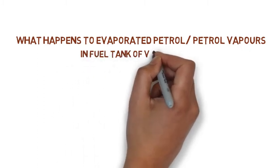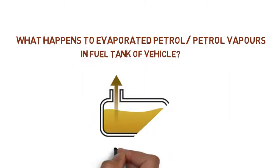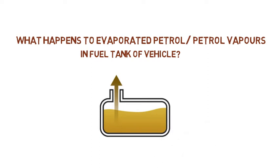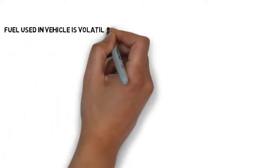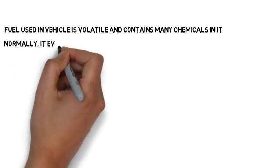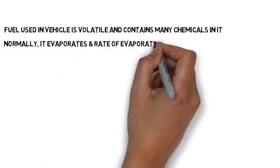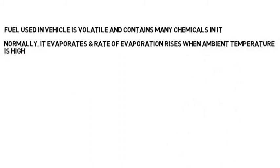Hello friends. Fuel is stored in the fuel tank of the vehicle and evaporation is a general phenomenon at ambient temperature. Today we will see what happens to these evaporated petrol vapors which are formed in the fuel tank of the vehicle. As we know, fuel used in the vehicle is volatile and it contains many chemicals. As it is volatile, it evaporates and the rate of evaporation rises when ambient temperature is high, like in the summers.